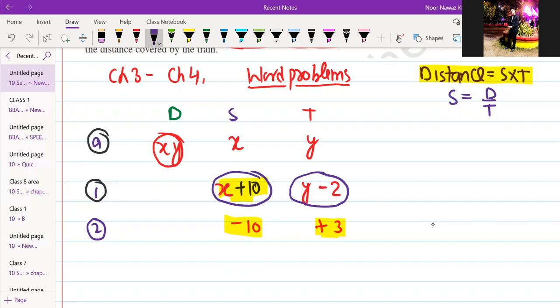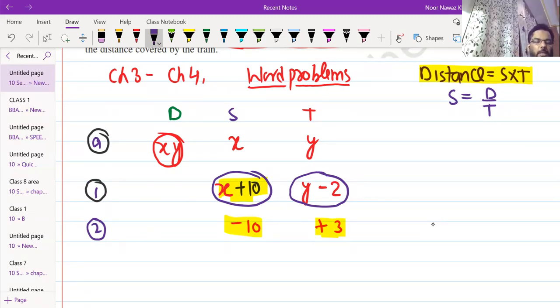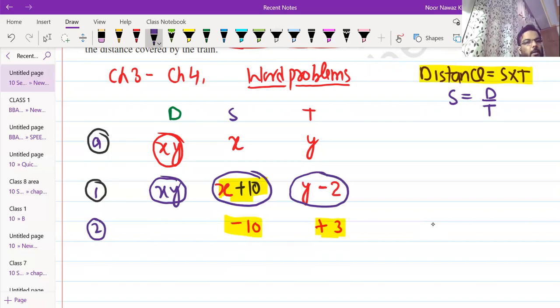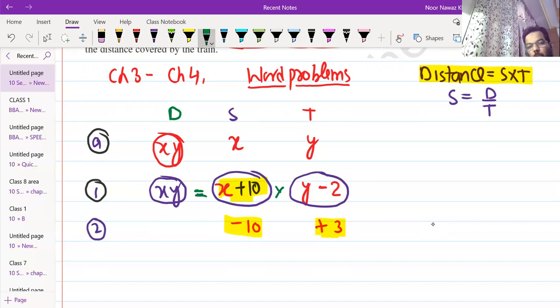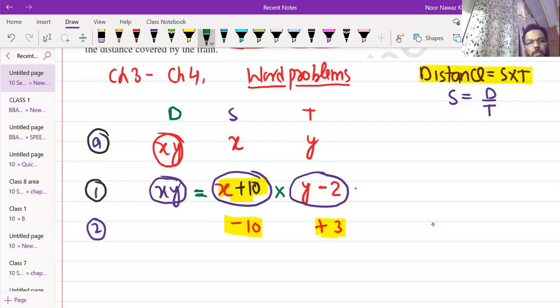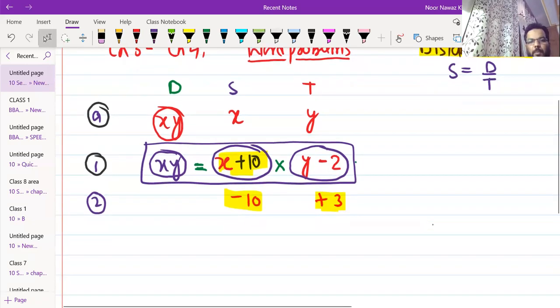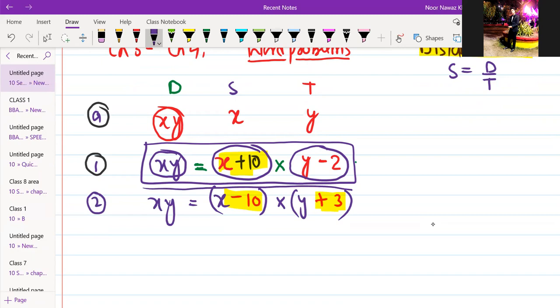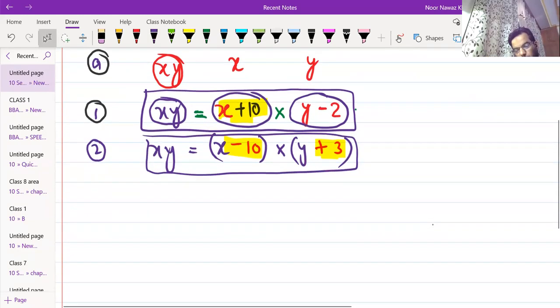Distance is equal to speed into time. This will happen. This will be our first equation. What is our first equation? XY is equal to x plus 10 into y minus 2. This is our first equation. In the same case, your speed is decreased, x minus 10, time is increased, y plus 3. So again, speed into time is equal to distance. Did you understand it or not?